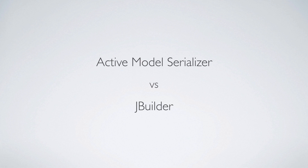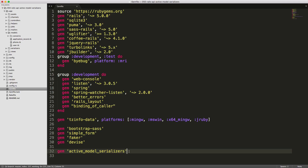Today we're going to look at Active Model Serializer over JBuilder simply because within a Rails API you don't have views, and I do like the object-oriented approach of Active Model Serializer. If you are using a full-blown Rails application, not just the API module, then you can use JBuilder natively as it is included by default, however you can also use Active Model Serializer with it as well.